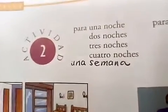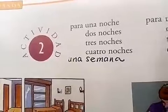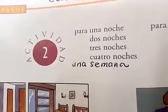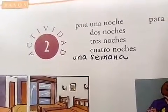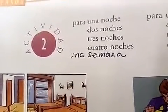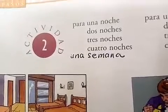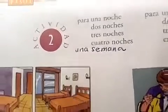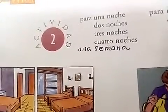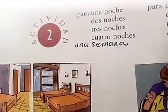Number of nights. Para una noche is for one night. Dos noches, tres noches, cuatro noches. If you would like to book a room for a week, you need to say una semana.